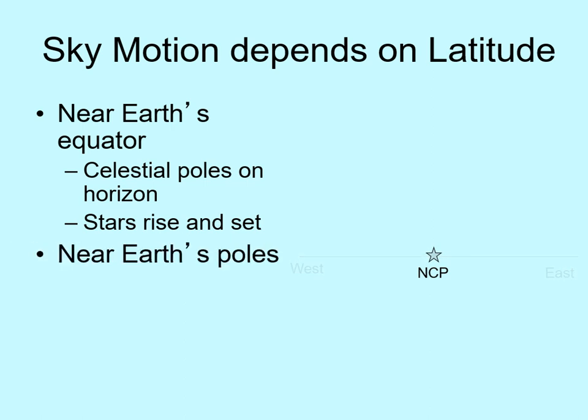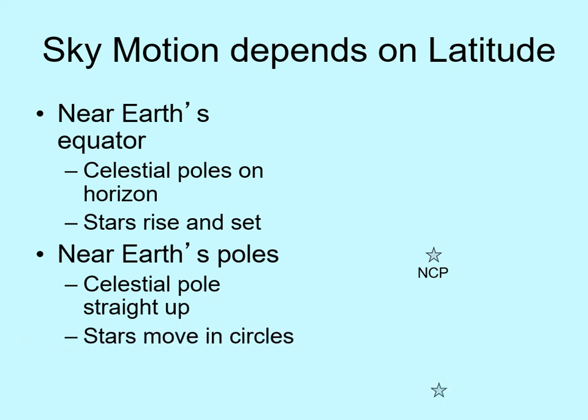Now let's change our viewpoint to the north pole. Here, the north celestial pole is straight over our heads, and stars will appear to rotate around this point. But now we aren't looking near the horizon, so stars just go in circles above us. Even close to the horizon, stars move parallel to the ground all around us in a circle. There is a fairly bright star very close to the north celestial pole — it's Polaris, the North Star. Polaris isn't the brightest star, but it's important because it stays stationary while everything else rotates around it.